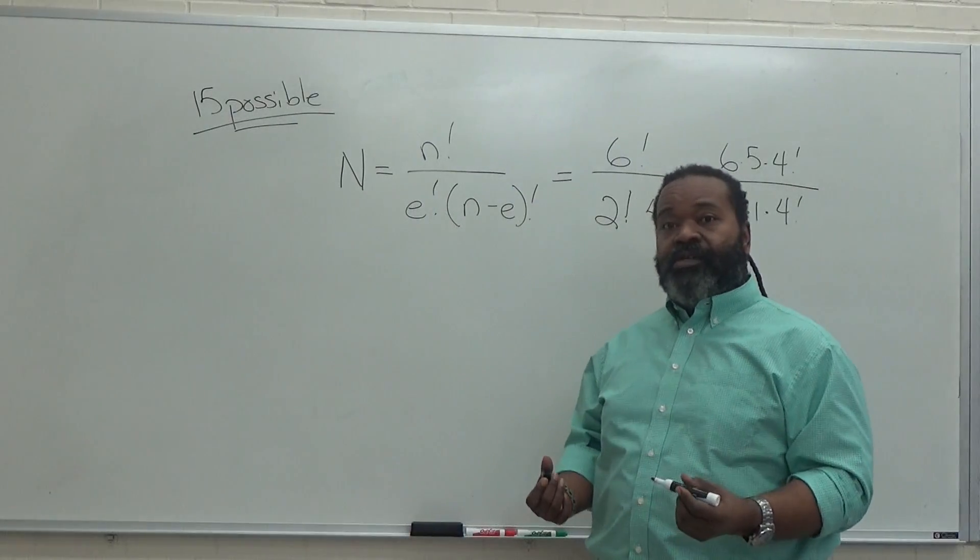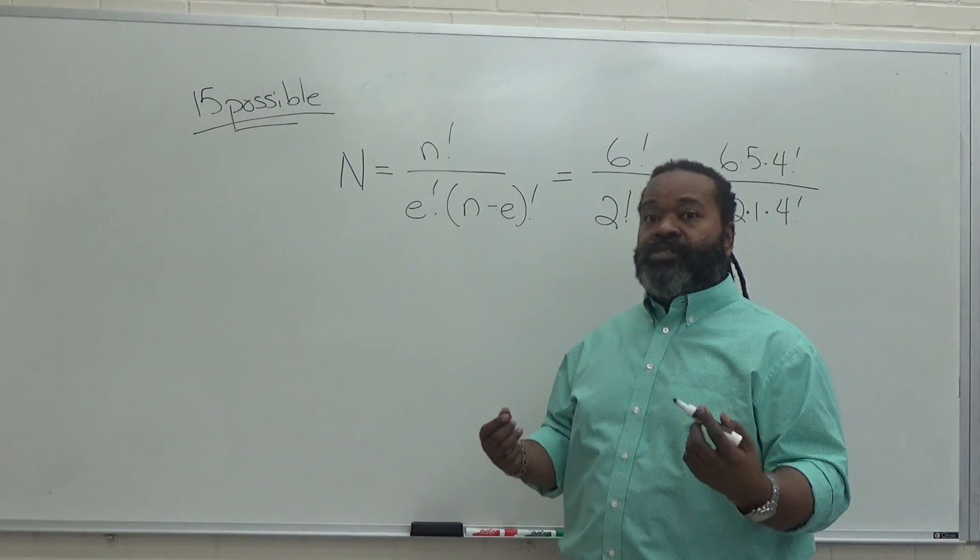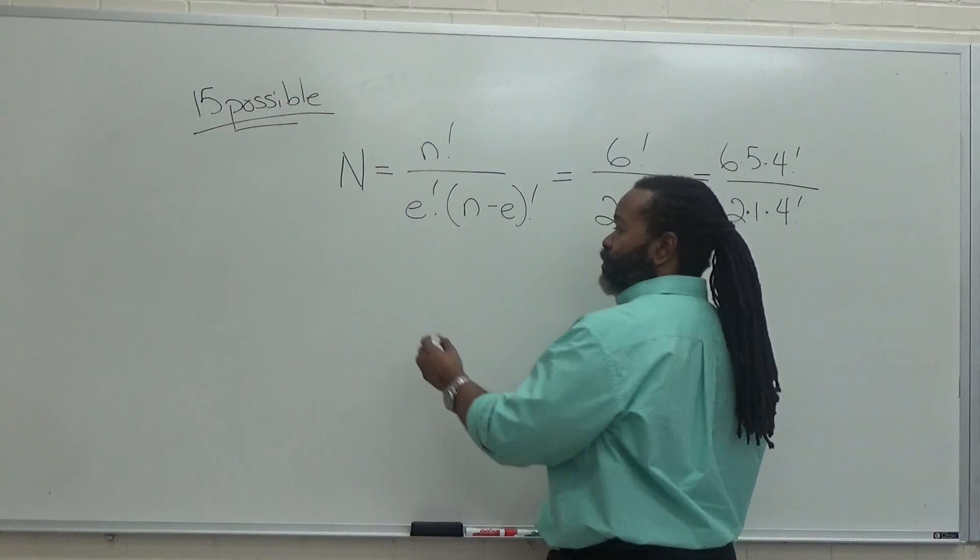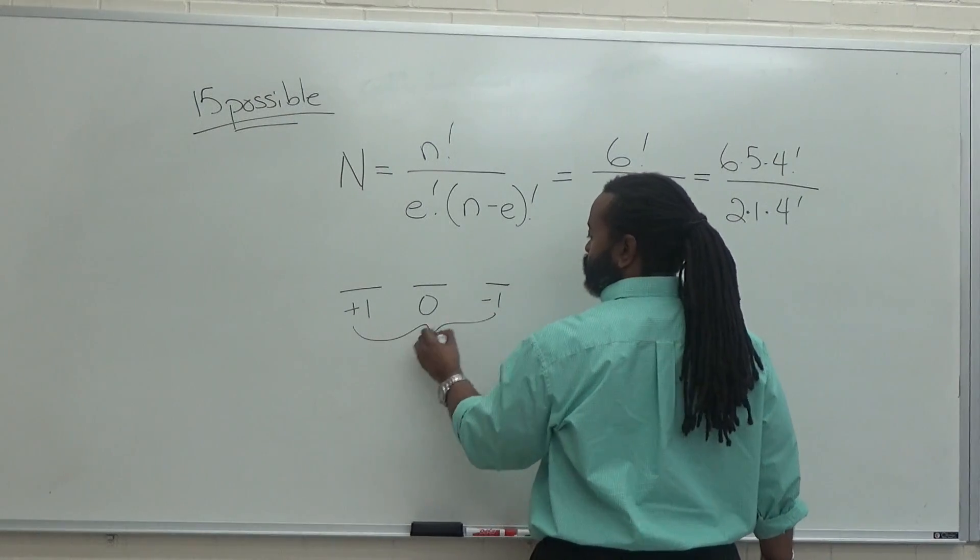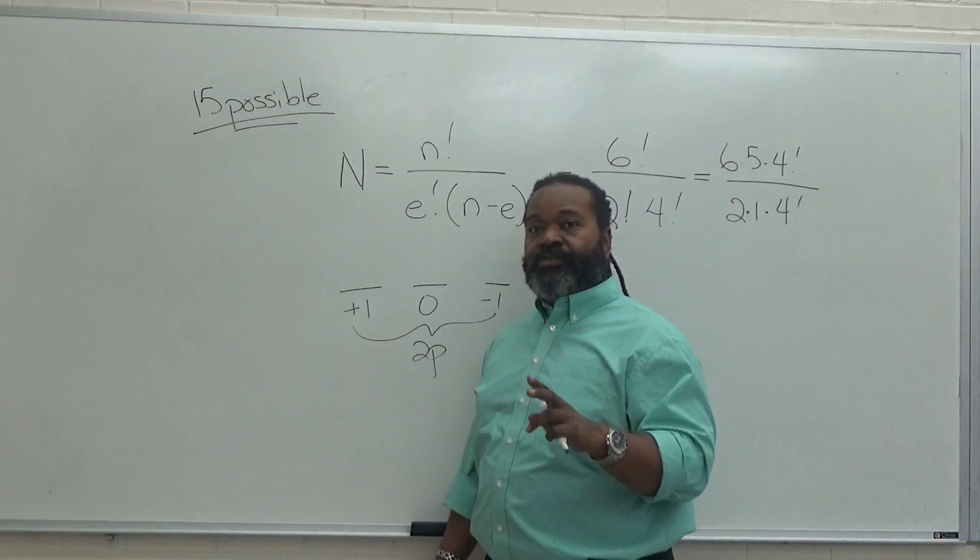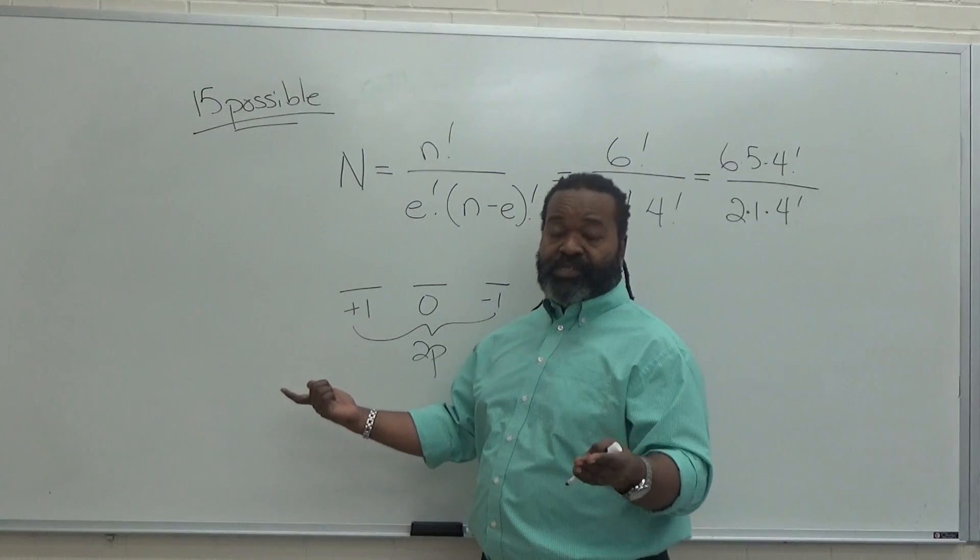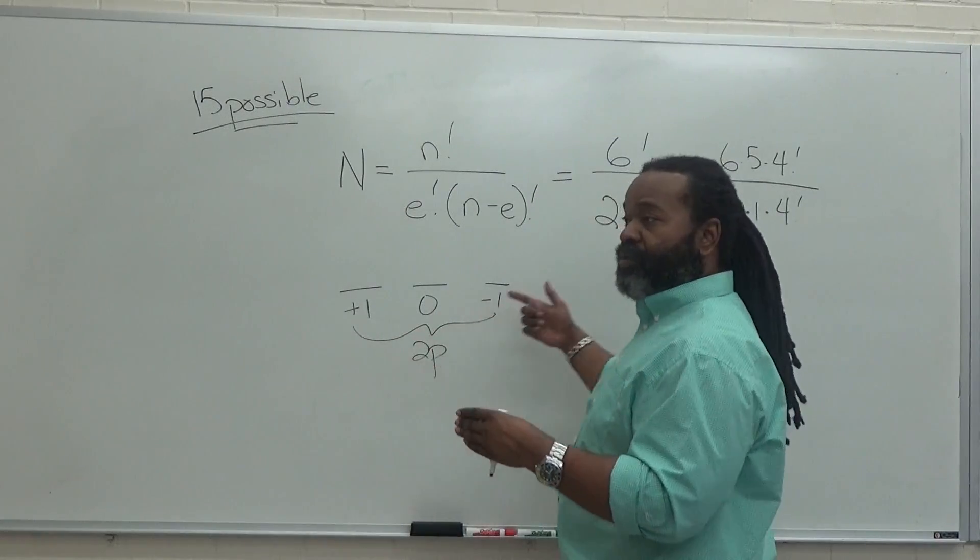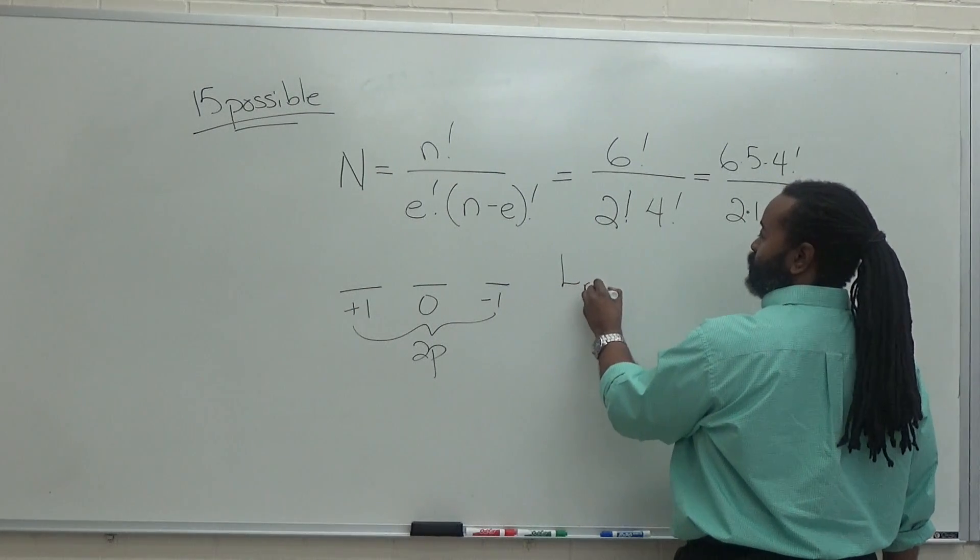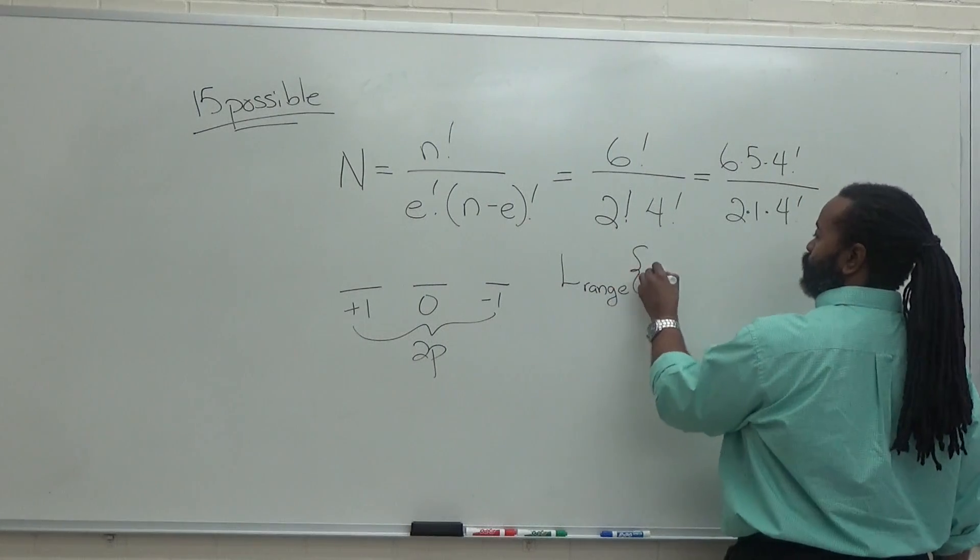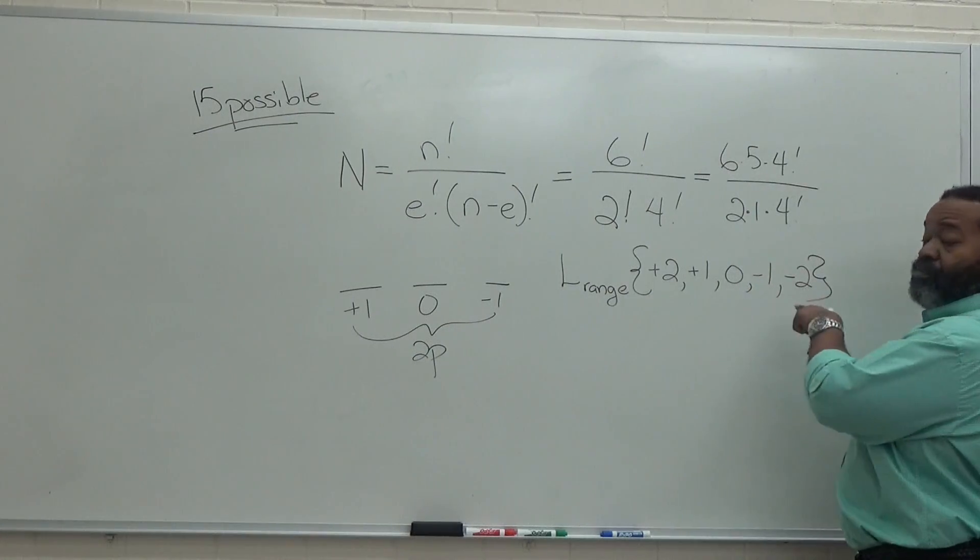The next step to determine the max range for the angular momentum and the max range for the spin is pretty straightforward. Therefore, if we take our p orbital, plus one, zero, minus one, if we put two electrons in and we put them both in the plus one, then our L max is going to be plus two. That means that we can go from plus two down to minus two. So our L range starts at plus two and goes down to minus two.